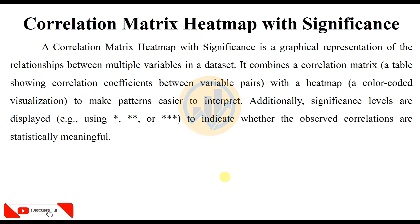A correlation matrix heatmap with significance is a graphical representation of the relationship between multiple variables in a dataset. It combines a correlation matrix — a table showing correlation coefficients between variable pairs — with a heatmap, a color-coded visualization to make patterns easier to interpret.